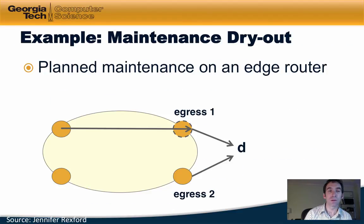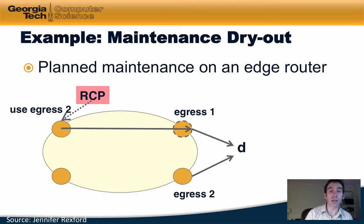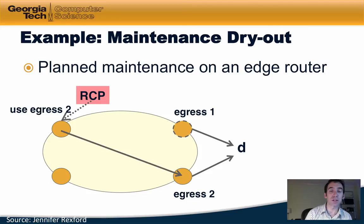One example is called maintenance dryout. The idea here is that a network operator may want to do planned maintenance on an edge router. If the operator wants to do maintenance on egress router 1, the operator could use something like the RCP routing control platform to directly tell a router at ingress to send its traffic for a particular destination to egress 2. This would be much more difficult in today's networks because the network operator would have to use existing routing protocols to adjust the configuration of individual routers to switch their route from one egress point to another.